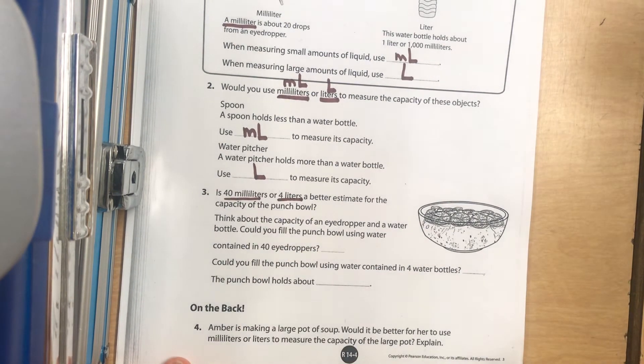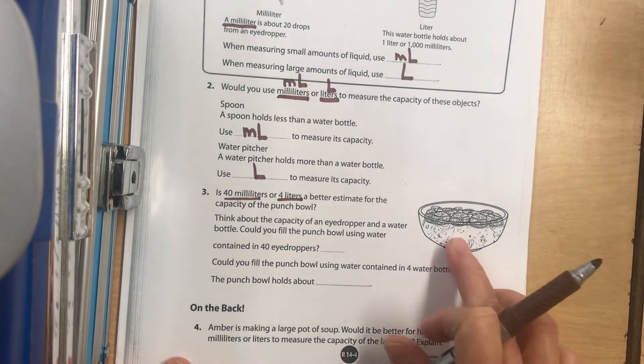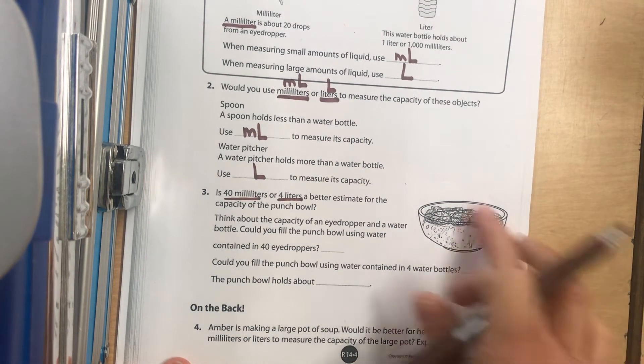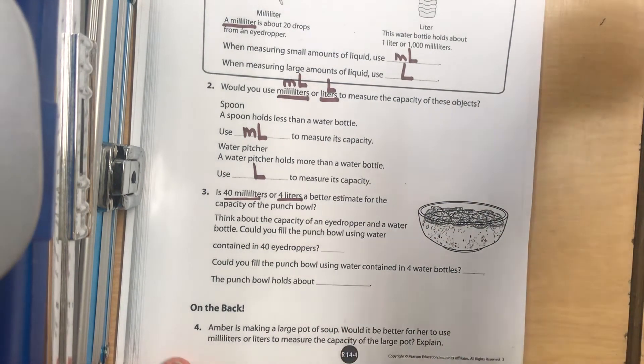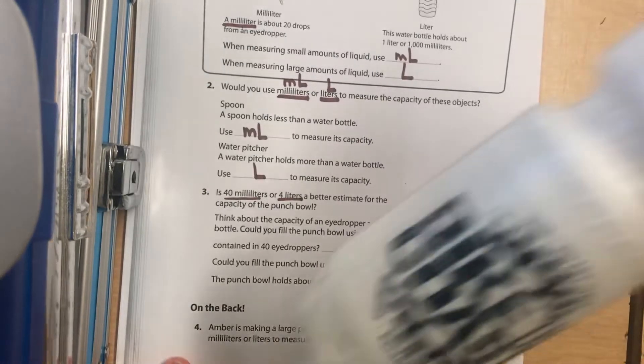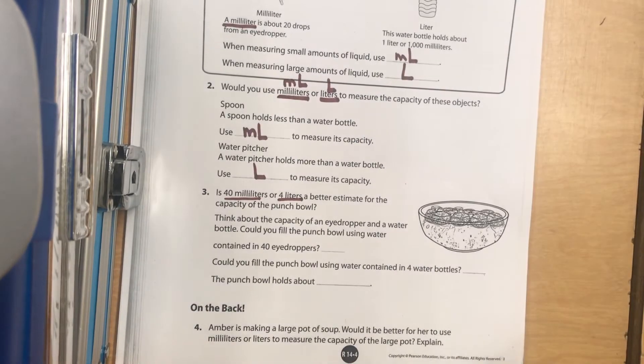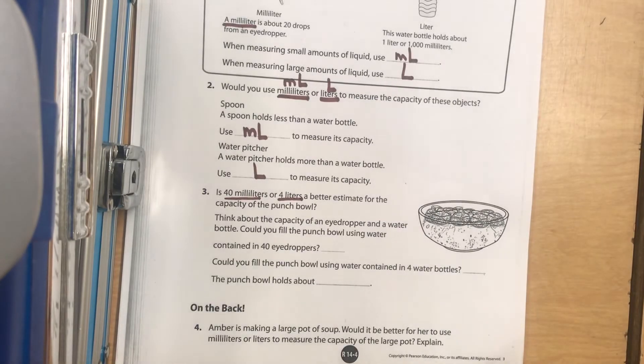Which one is a better estimate for how much liquid is in there? So think about your eyedroppers. Do you think you could take an eyedropper and squeeze it out 40 times and fill that huge punch bowl? Or do you think you would take a water bottle and dump that out four times and fill the water bottle? Four times. Excuse me. Four times. Four of these.